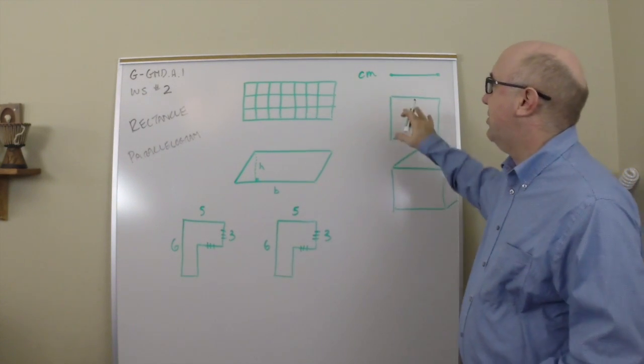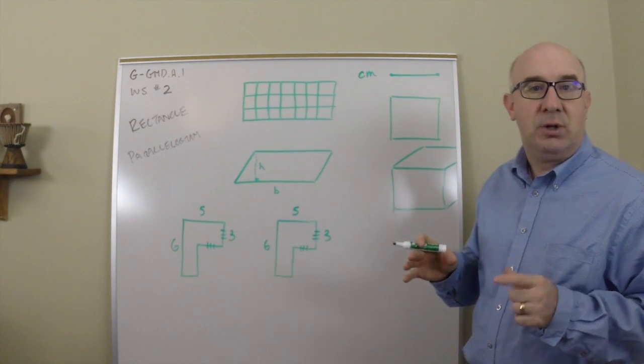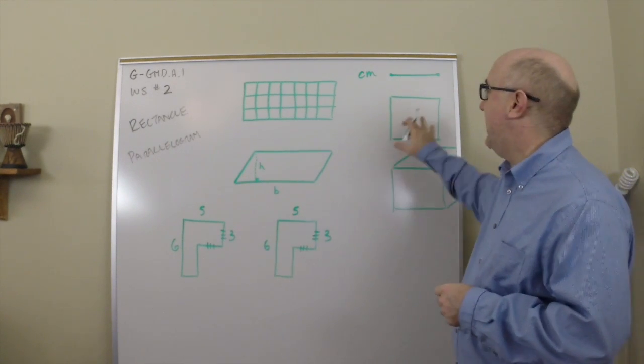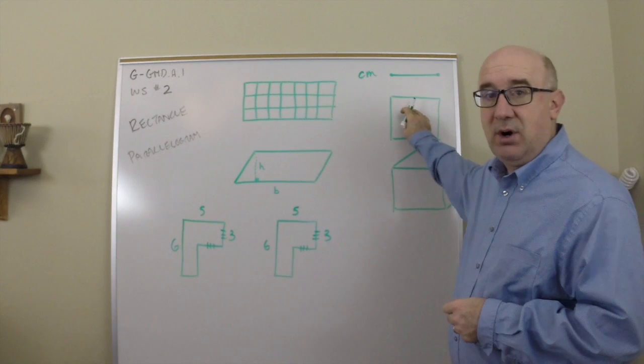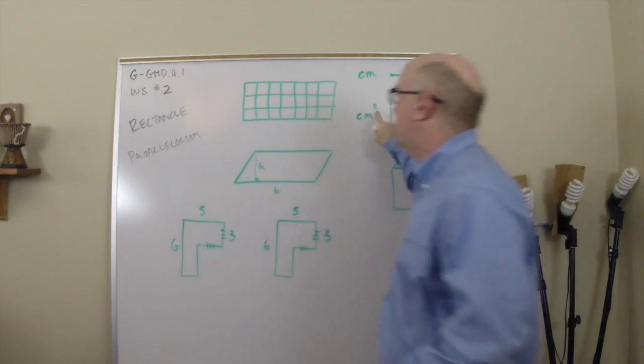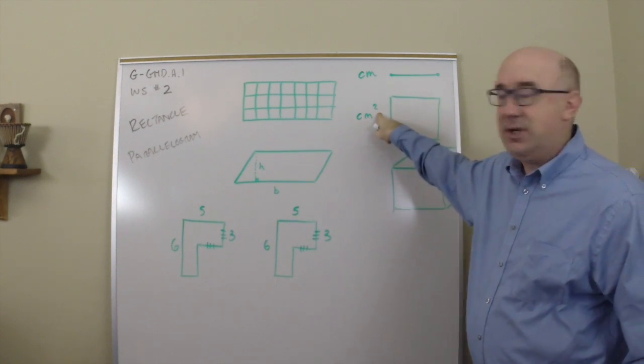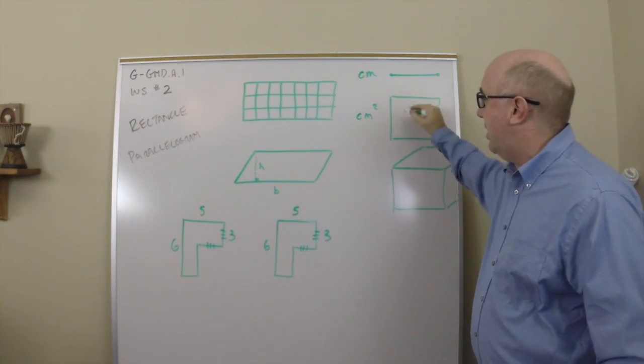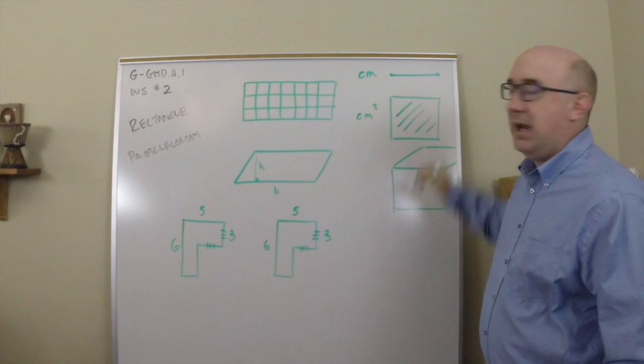When we go to area, we're now doing a two-dimensional measurement. We're measuring how many squares are in the object, and so you know that we go to a second power, a second dimension. So we are doing a region or a square.